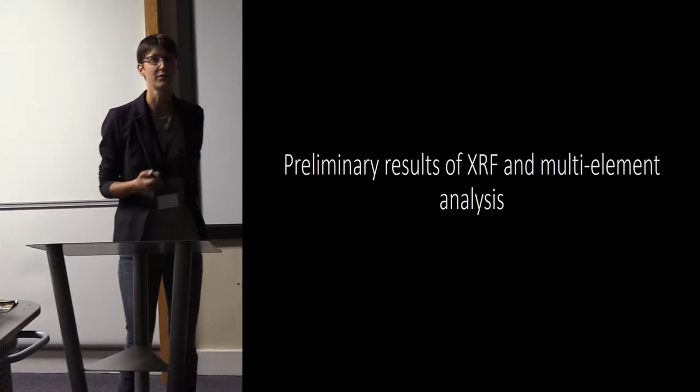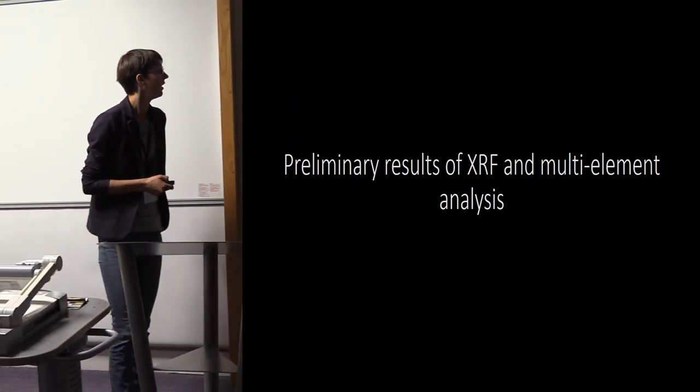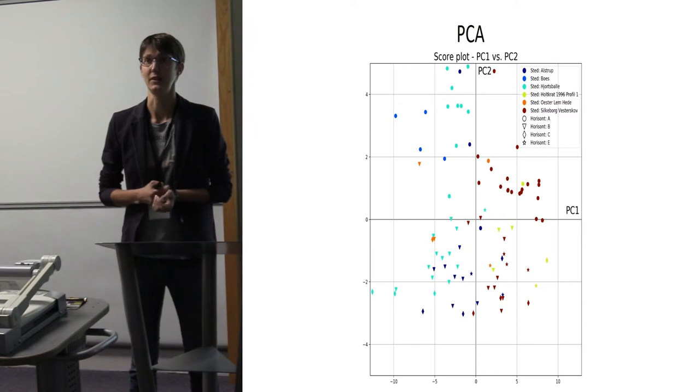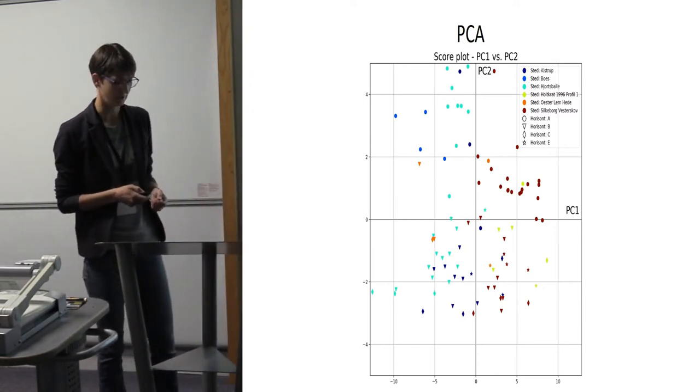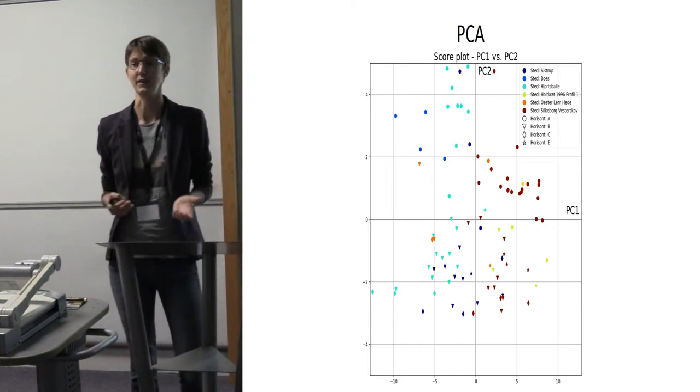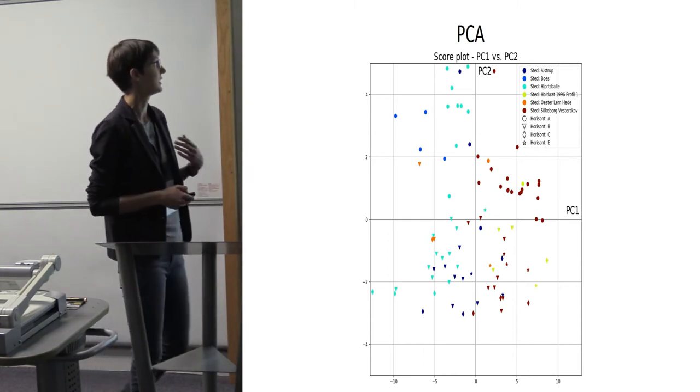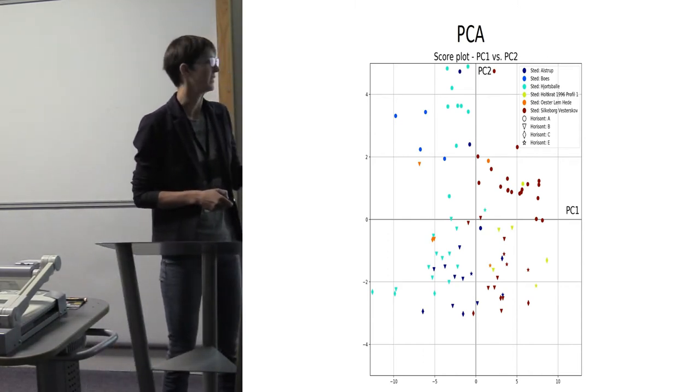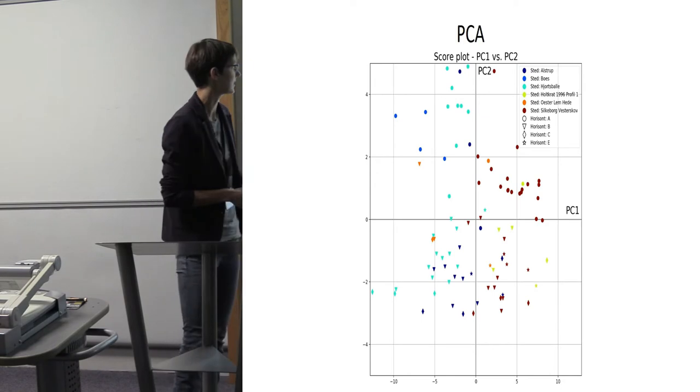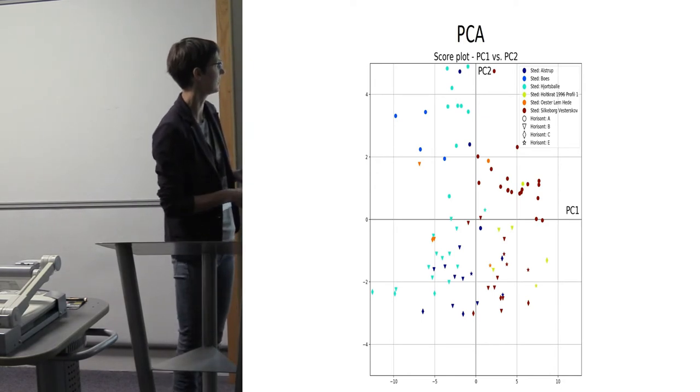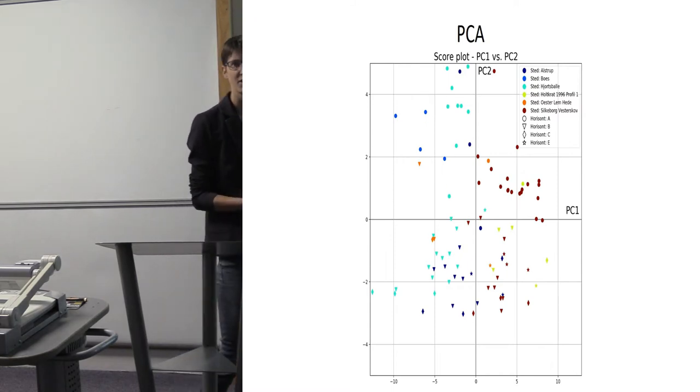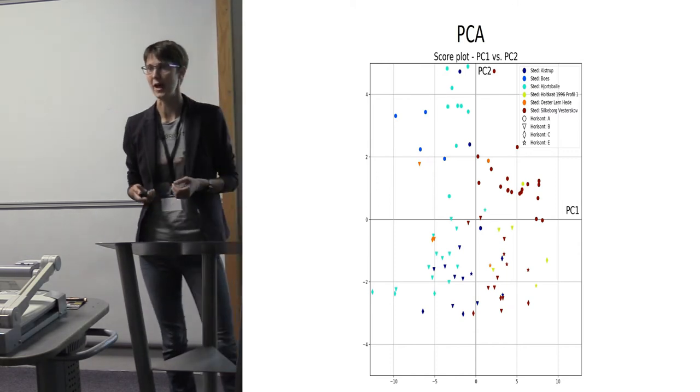The first thing we did when obtaining the data set from the multi-element analysis was a principal component analysis to see if we could see any patterning. When plotting PC1 versus PC2, we can see that probably PC2 is reflecting the depth or soil horizons. Generally speaking we have the C horizons down here, B horizons, and up here the A horizons. There are variations and outliers but there's a general pattern.